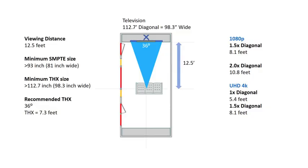Another option is to install a larger screen. Using a viewing distance calculator, such as the one I found at www.projectorscreenstore.com, I am able to learn that a screen over 112.7 inches will also satisfy THX recommendations without changing the seating position. It should be noted that there is also general guidance on viewing distance needed to overcome pixelation, indicating a shorter minimum viewing distance for UHD 4K televisions at 1.5 times the diagonal than that required for 1080p televisions at 2.x times the diagonal.